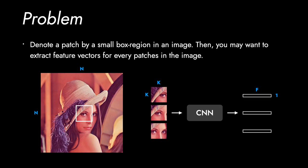Let's see the definition of problems. For some reason, you may want to extract visual features for a small box region in an image, where the box is called patch. Here, CNN takes an image of the small patch, then outputs the corresponding one-by-one visual feature, where the receptive field size of CNN is the same with the size of patch.